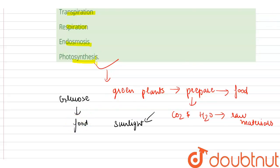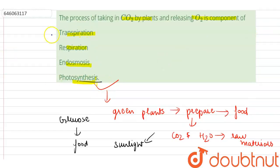So, the correct option here is photosynthesis. Transpiration is the loss of water, that is H2O, in the form of vapors, water vapors from the plant.